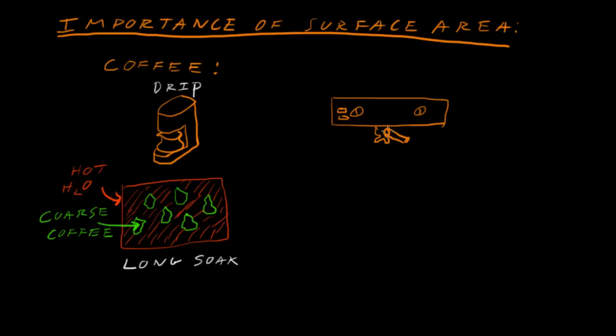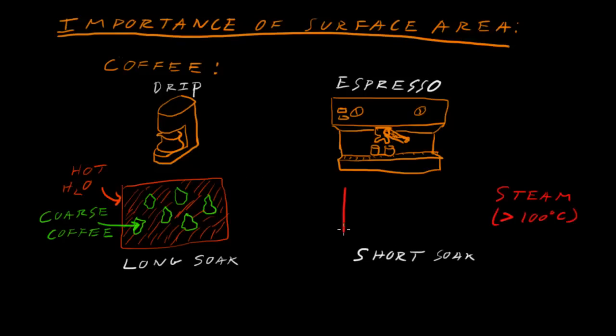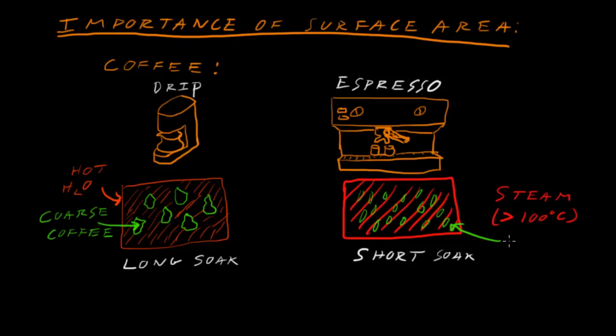An espresso machine, however, uses steam. So the water is really hot, above 100 degrees Celsius, and it's forced in there for a very short soak, maybe like 30 seconds. So how do we make sure we get all the flavor out of our coffee, even though it's only going to be exposed for such a short amount of time? We make it smaller. We grind the coffee beans into a much finer powder, and that allows us to get all the flavor out in a shorter amount of time.